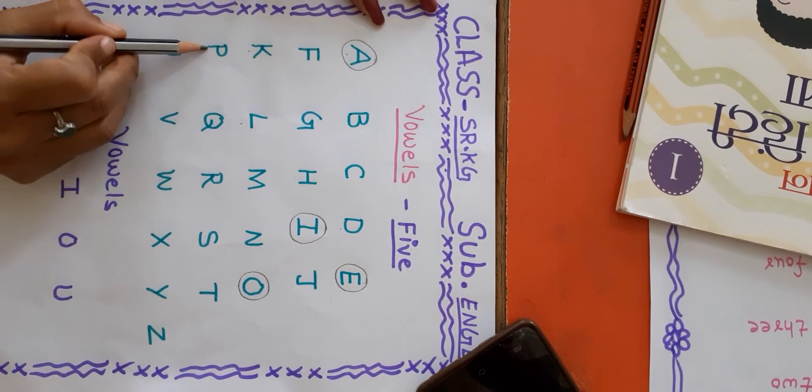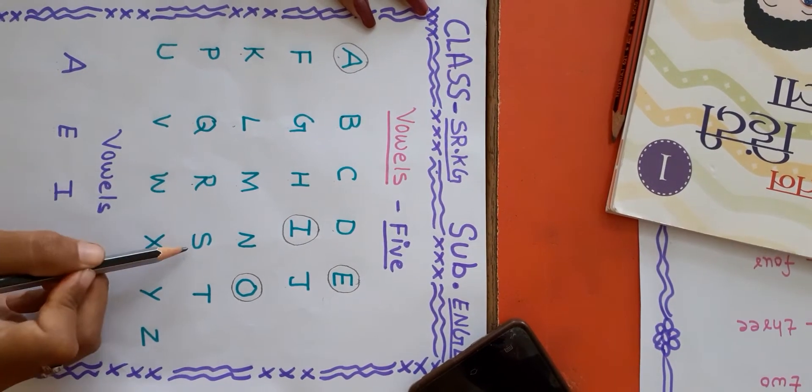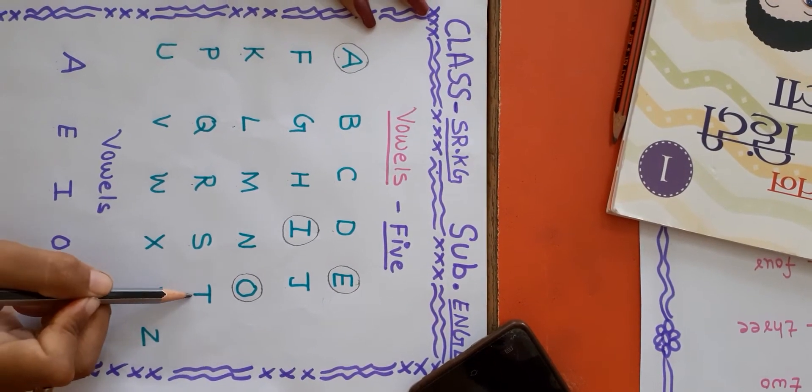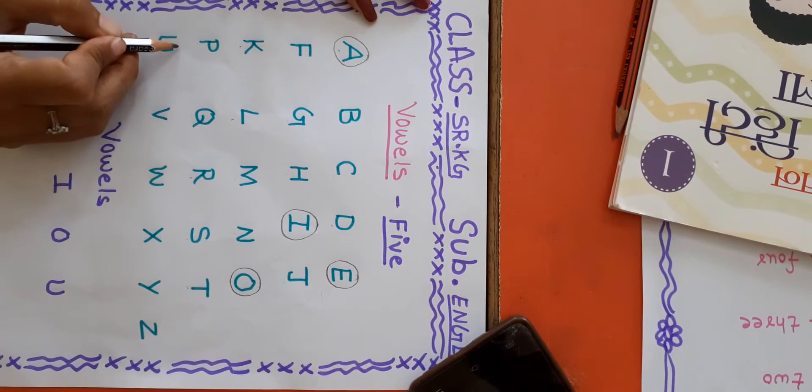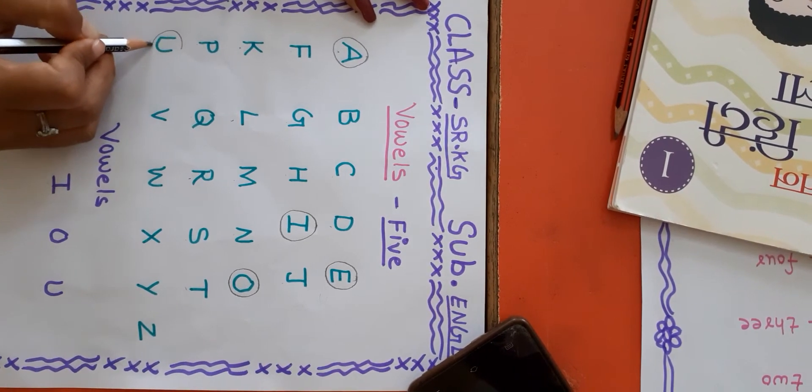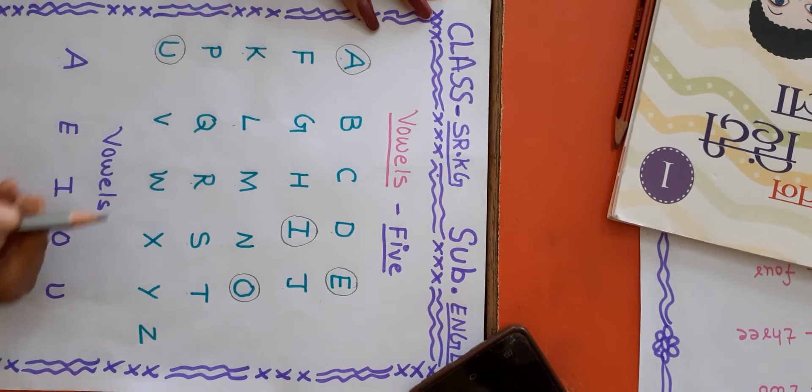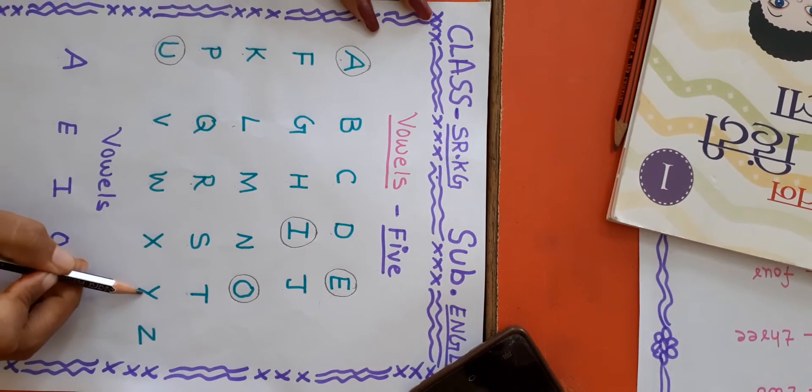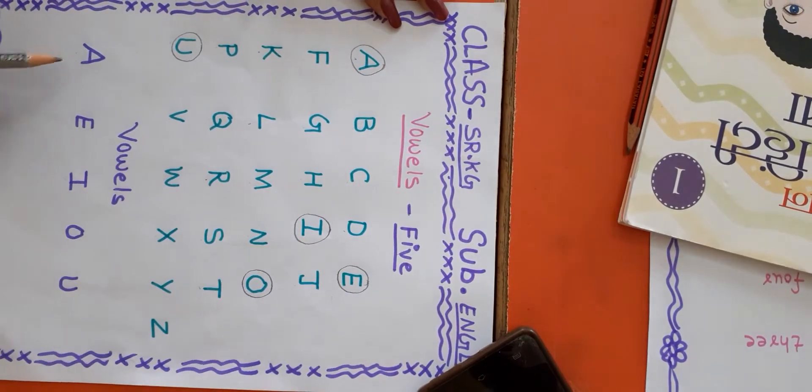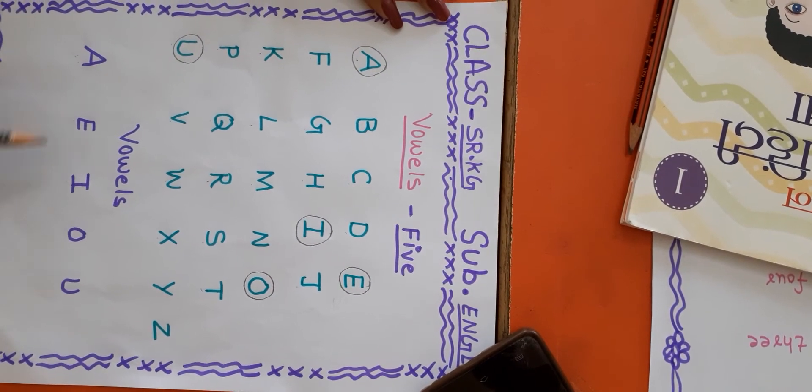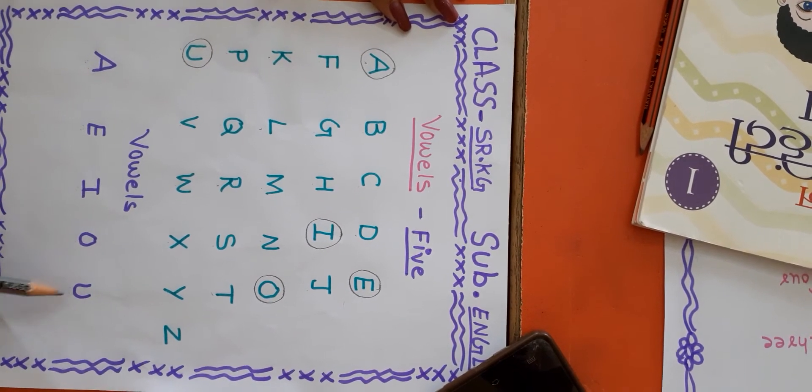P Q R S T U, vowel U. Now circle V W X Y Z. There are five vowels: A E I O U. Now again repeat.